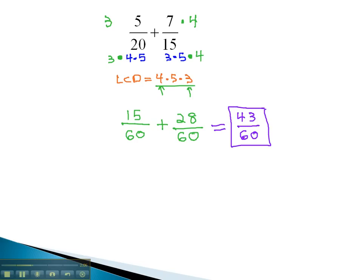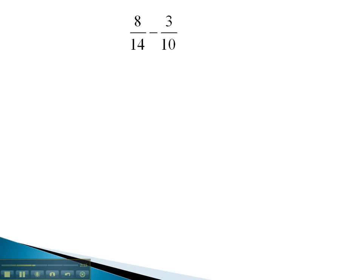Let's take a look at another problem, where we're asked to subtract with different denominators. In this problem, we see the different denominators of 14 and 10. We can factor them to see what factors are missing from each denominator. 14 is 2 times 7, and 10 is 2 times 5.